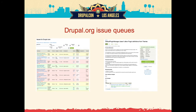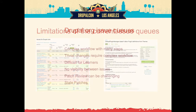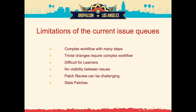However, there are new tools. The limitations of the current issue queues - first, it's a complex workflow with many steps. Making a patch - the documentation node is 12 steps. If you need to re-roll a patch, that's another 18 steps. And usually when people re-roll patches, they'd like to see an interdiff, which is an additional 8 steps. So our workflow requires about 38 steps of information just to be able to interact with our issue queues.